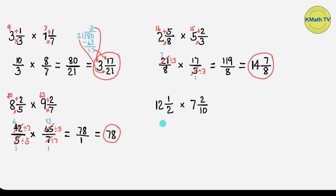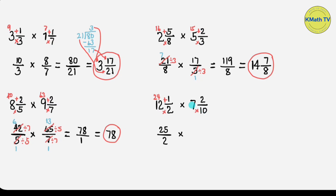Last example: let's multiply 12 and 1/2 times 7 and 2/10. Let's change each mixed number to an improper fraction. Multiply the denominator and the whole number: 2 times 12 equals 24. Add the numerator plus 1: 24 plus 1 equals 25. This is the new numerator. Copy the denominator. Now let's write the multiplier as an improper fraction: 10 times 7 equals 70. Add the numerator plus 2: 70 plus 2 equals 72. Copy the denominator 10.